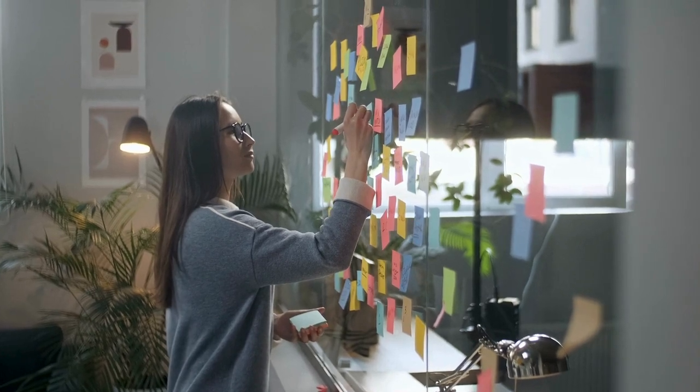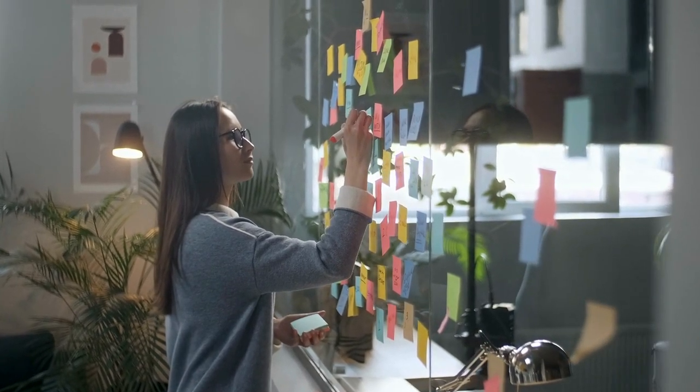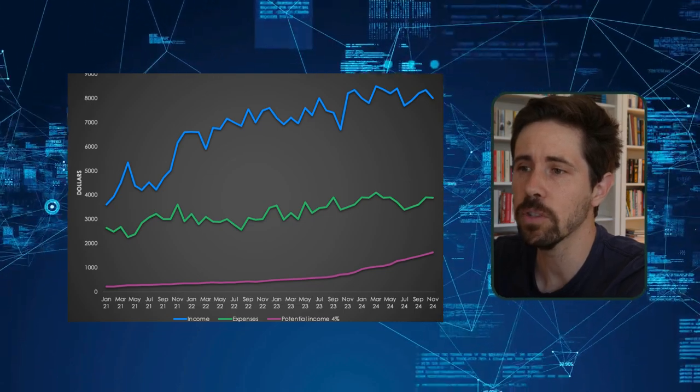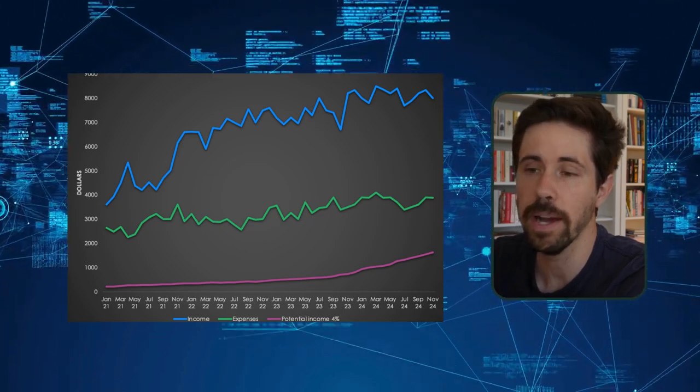To calculate your crossover point, we need to keep track of three items: your household's monthly income, your expenses, and the value of your investments. The authors of Your Money or Your Life recommend that we create our very own wall chart, where we track our progress to reaching financial independence. The wall chart is a graph that tracks in one place the evolution over time of those three items.